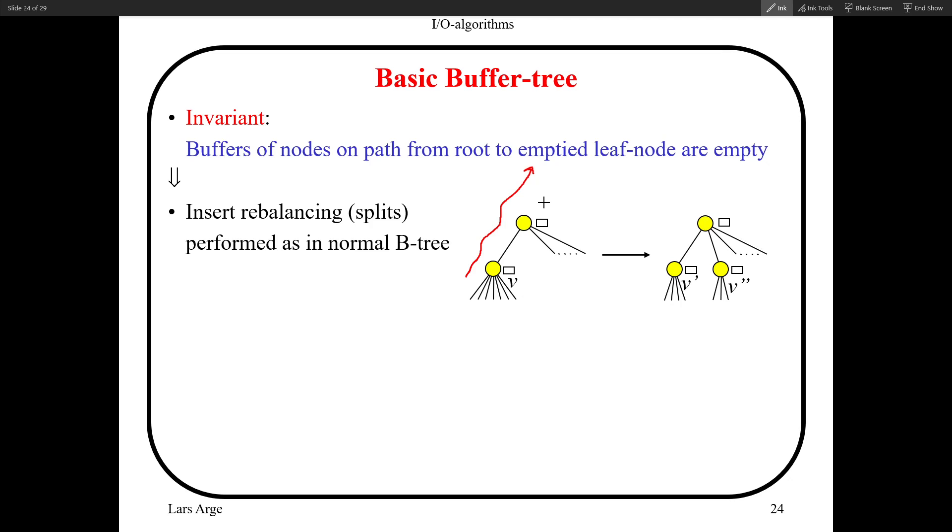This means that when it comes to rebalancing of insertions, we don't have a problem, because if I need to rebalance this node V, the buffer of V is empty. So I just split it in two, and then this extra node that I get will also have its buffer empty. If this causes the parent to split, the parent's buffer is empty, so it will create two nodes whose buffers are empty, and so on.